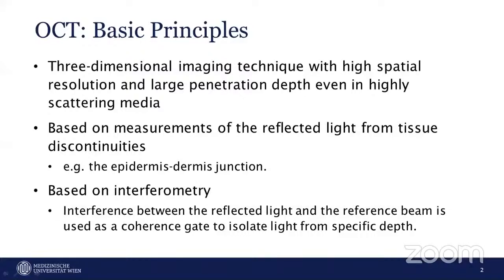Different structures in different organs or different samples can be visualized — for example, in human skin we can see the epidermis and dermis junction due to the discontinuity. This is achieved using optical coherence tomography. OCT is based on the principle of interferometry, where the interference between reflected light is used as a gating mechanism to isolate light from a specific depth.